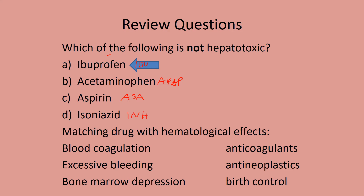Match the drug with its hematological effect. Women on birth control — oral contraceptives — should not smoke because of the risk of blood coagulation. Anticoagulants, by their name, prevent clotting — so you're going to bleed. And drugs that are against new growth — antineoplastics — affect the bone marrow where blood cells are dividing and forming.